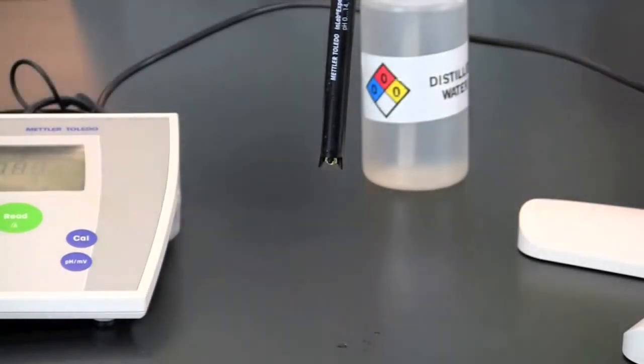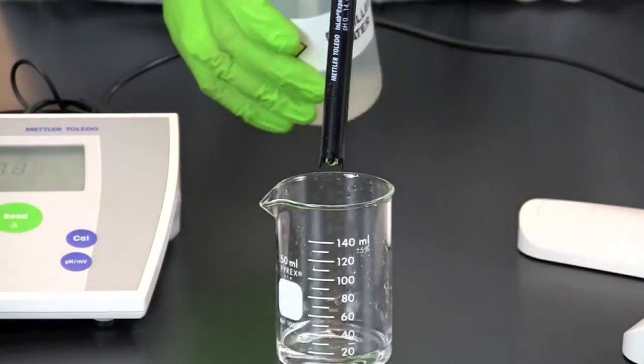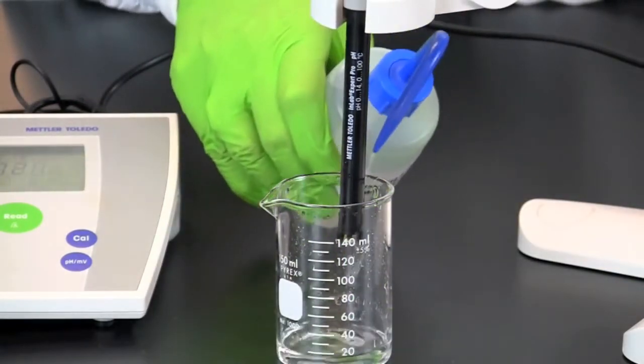When the pH 10 standard has been calibrated, rinse off the electrode with distilled water.